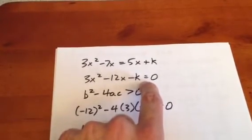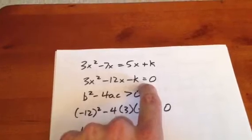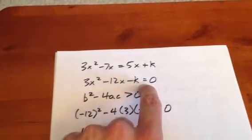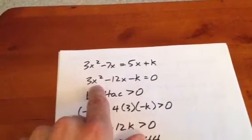Now, we want this intersection to occur twice, so that means there's going to be two solutions to this, which means b² - 4ac is going to be greater than zero.